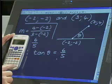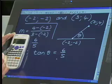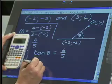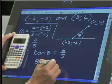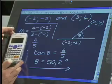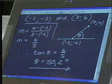So shift tan, fraction button to put in the 6 over 5, and then equals. And the calculator gives me 50.1944, so correct to one decimal digit, the angle theta is 50.2, and so that is the inclination.